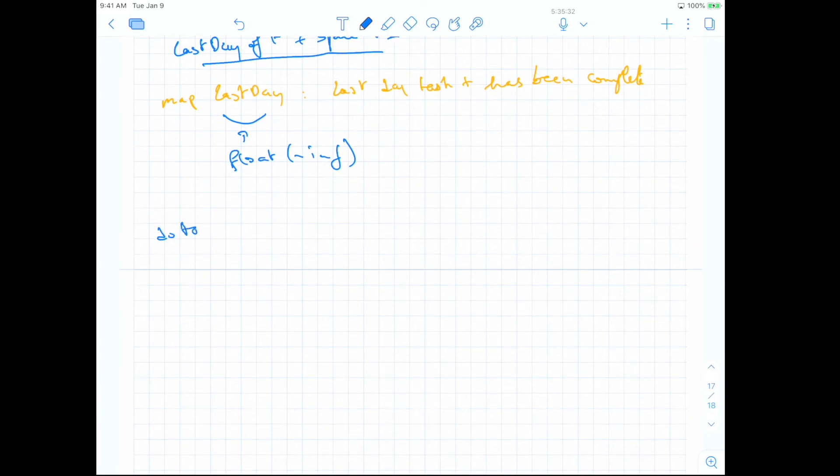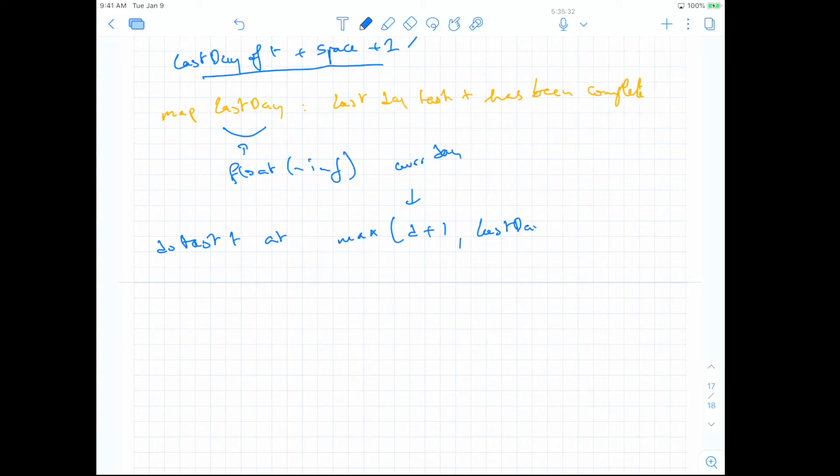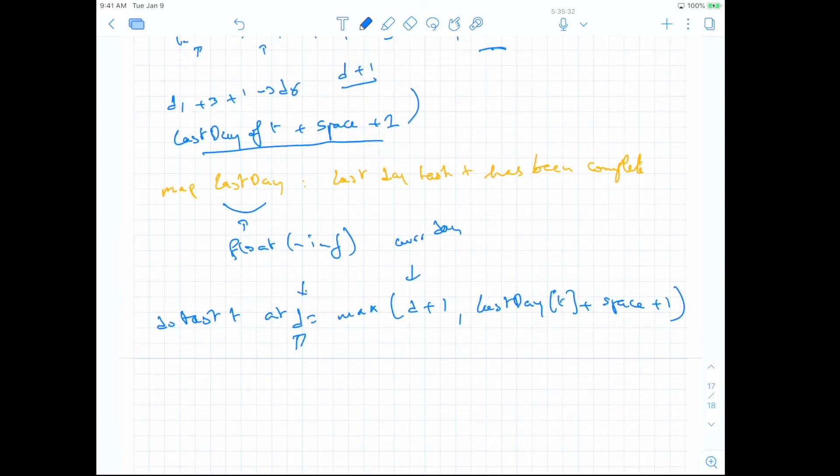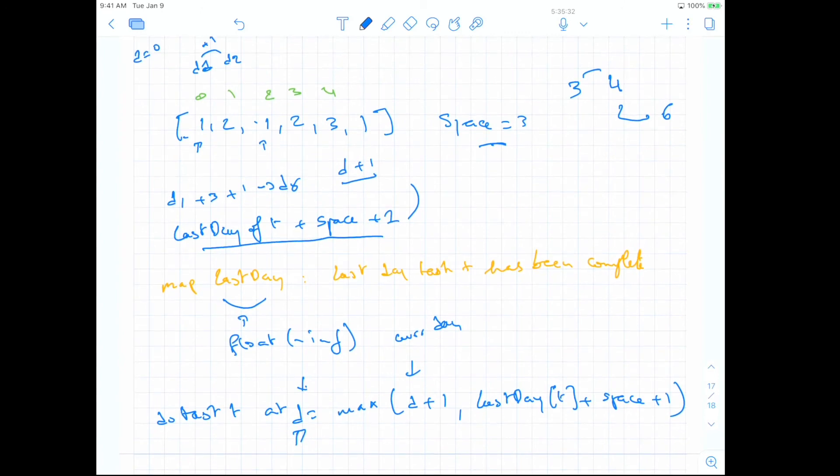So that's pretty much it. So the formula we need to do for each task, we can do task T at the max of, this is just the counter of the current day, essentially. And the last day at position for the same task, plus space, plus one. And so we can just update d because remember, this is the current d we are doing the task at. So we update it and then at the end, once we are done, we can just return the value here because this would be the day at which we did the last task and that's how many days overall it will take, right? Yeah. So that's pretty much it. We need a hash map and then we can take the max and that will give us the right solution. So let's implement this and make sure it passes test cases.